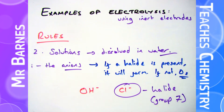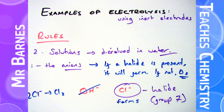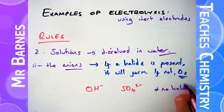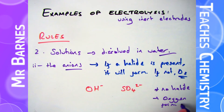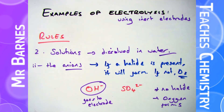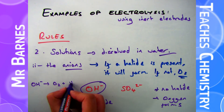So in this example with sodium chloride, chlorine is a halide therefore that's going to form. The OH- won't go near it, so chlorine will turn back into Cl2. If you have something that isn't a halide - for example SO4 2- sulfate - there's no halide present, therefore the OH- will go to the electrode and produce oxygen and water, and you will see bubbles of oxygen being produced.